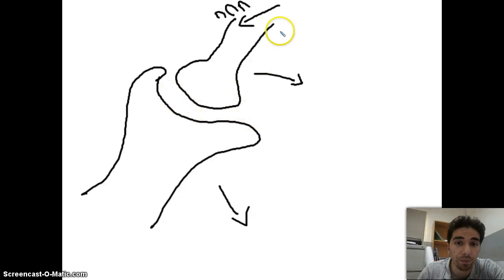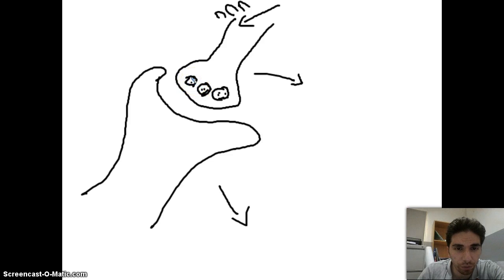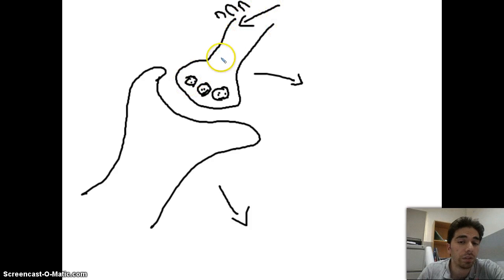Here we have the pre-synaptic membrane and the post-synaptic membrane, and the space between them is the synaptic cleft. At the end of the axon, in this bulb, we have vesicles — like sacks. Inside these sacks are special molecules called neurotransmitters. So they are filled with a lot of molecules called neurotransmitters.